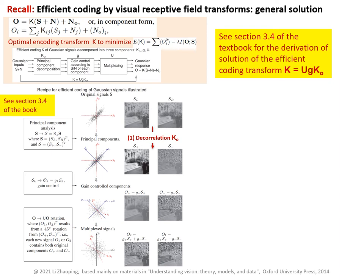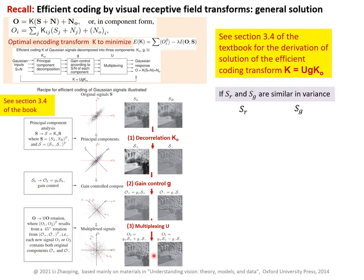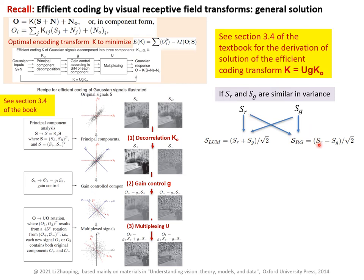Recalling from efficient stereo coding: the decorrelation step makes a summation channel and a difference channel from the left and right eye inputs. Gain control then gives a gain to each of these two channels according to the signal-to-noise in each channel. Now, if the red cone signal and green cone signal have similar variance — just like the left and right eye signals share this kind of symmetry — we can make exact parallels. Decorrelation mixes them together to make a summation channel, which is indifferent to whether it's red or green — just averaging them together into a gray-level luminance — while the difference signal favors one cone over the other, giving the chromatic signal.